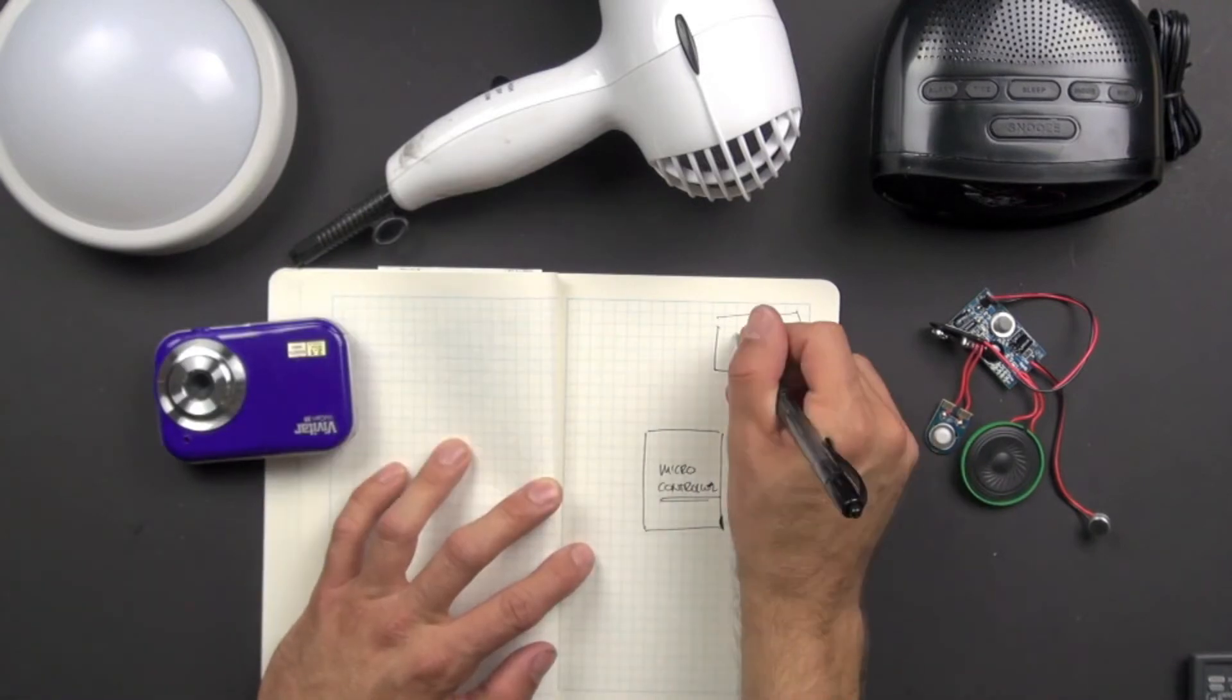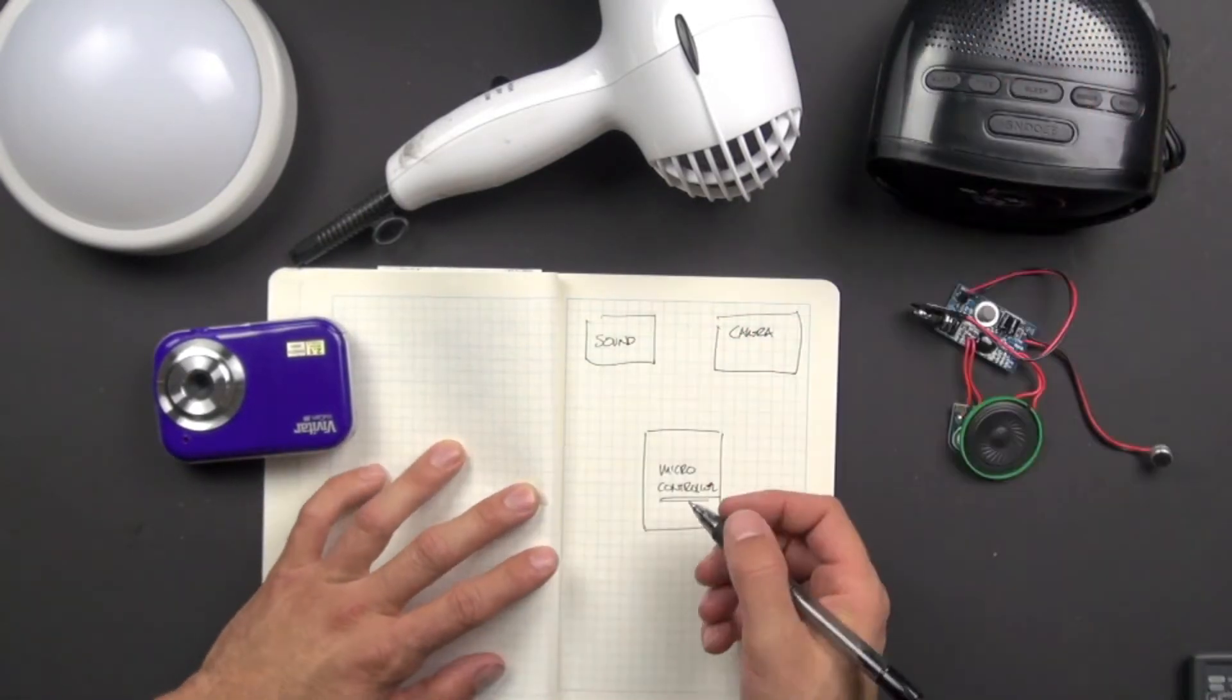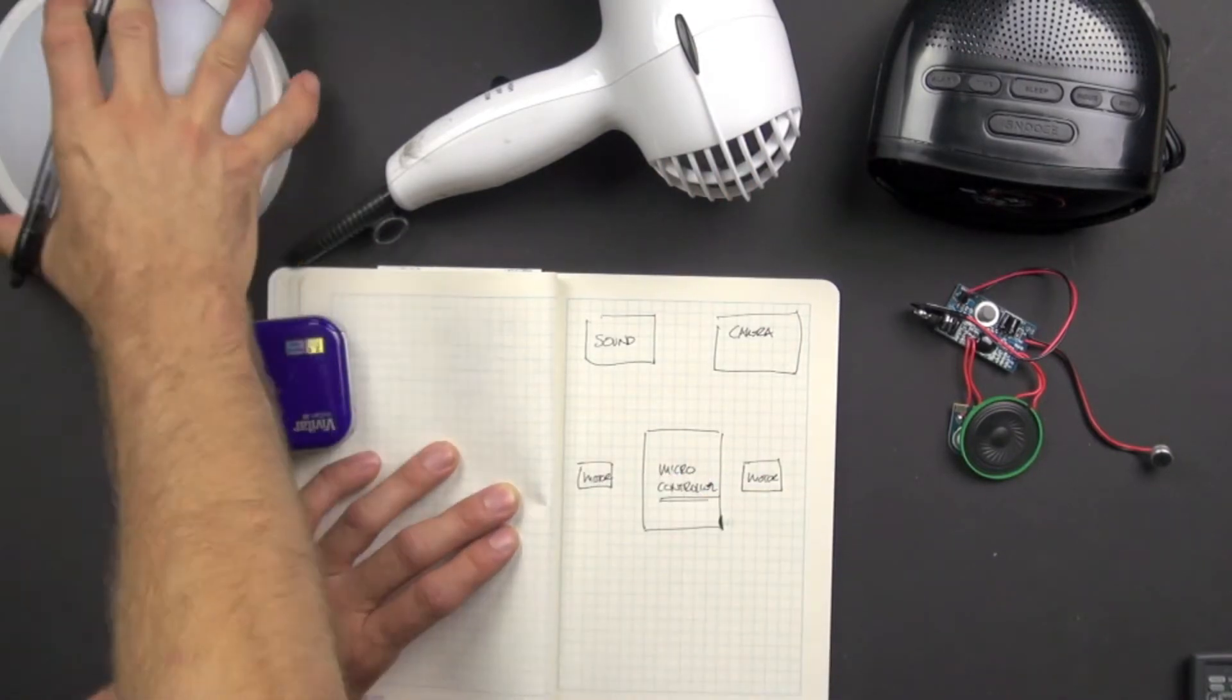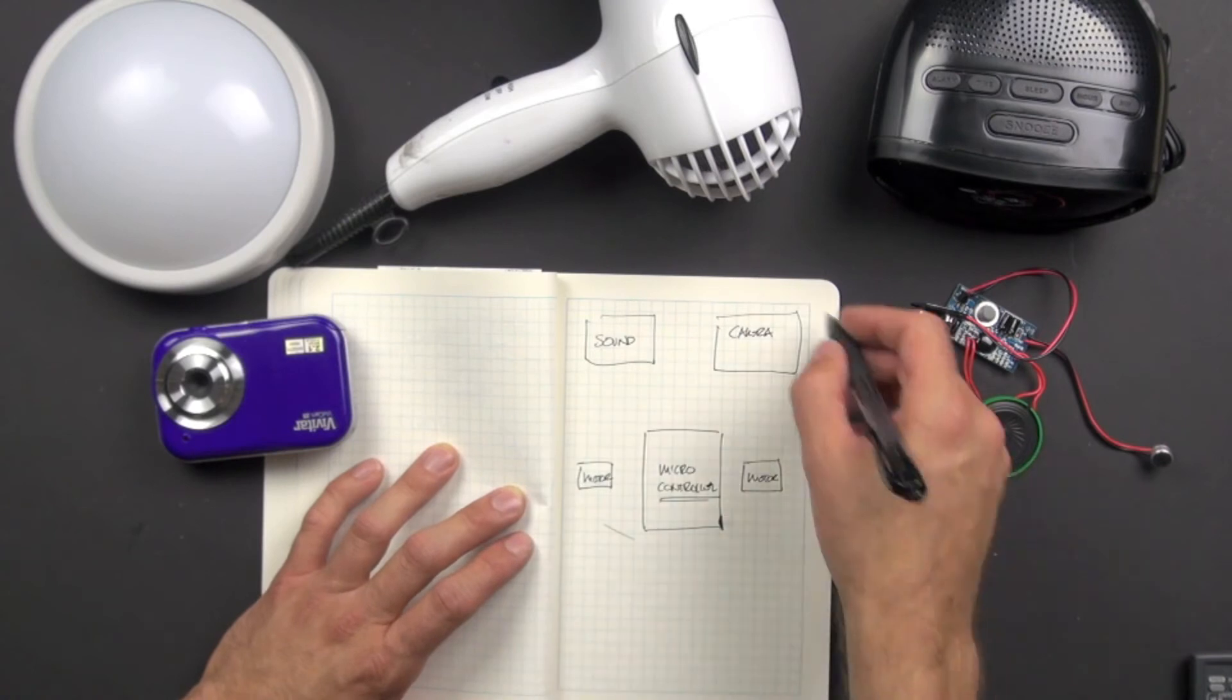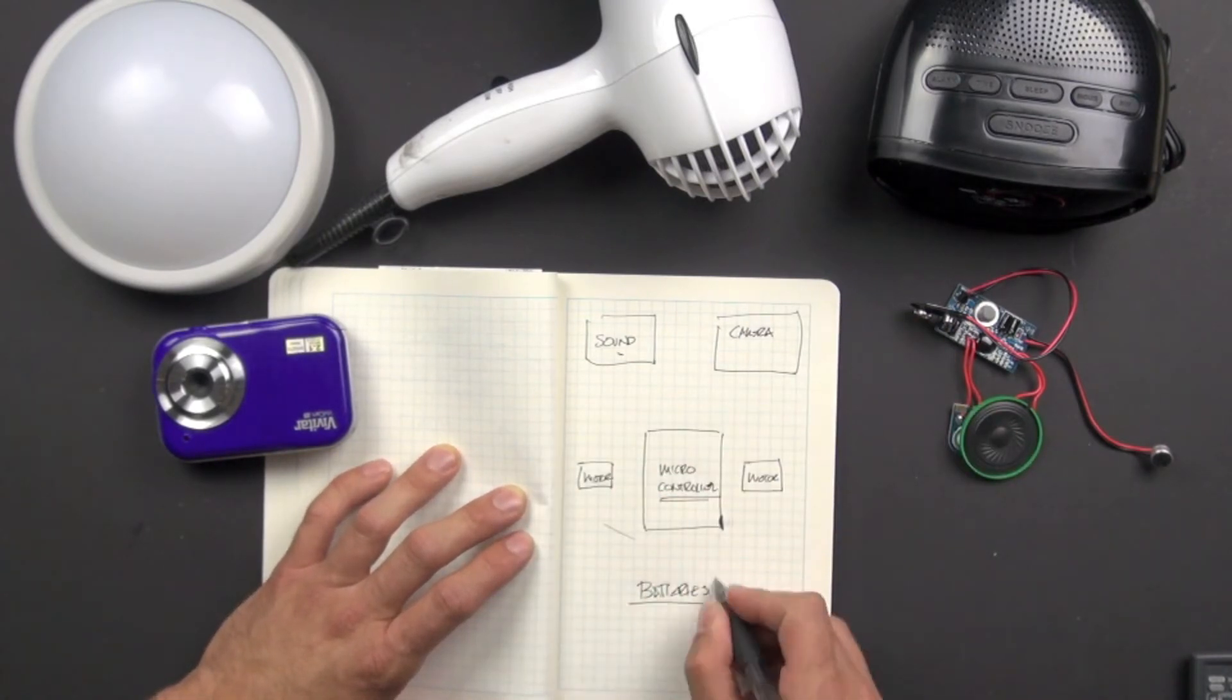And we've selected a microcontroller. And we've got our camera and our sound card and our motors from our hair dryer. And then, of course, we have our tap light. And we probably could use the tap light as our body to put everything together in. We need something to power all this. We need batteries.